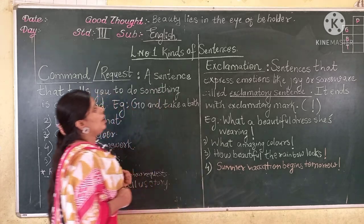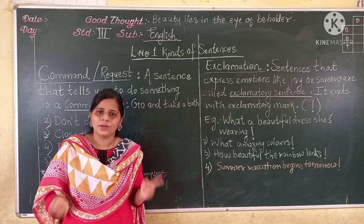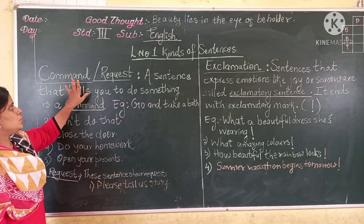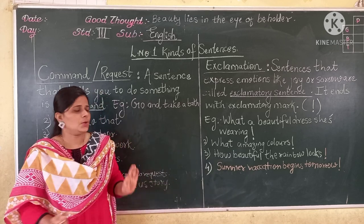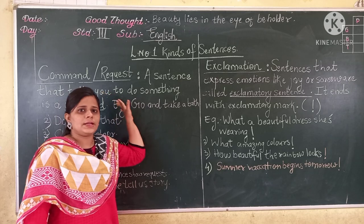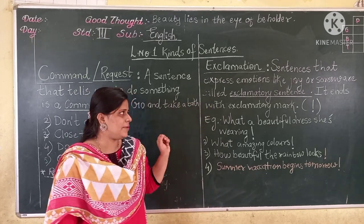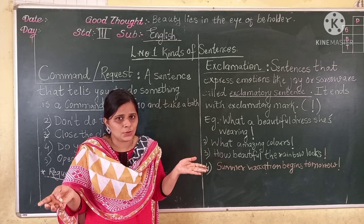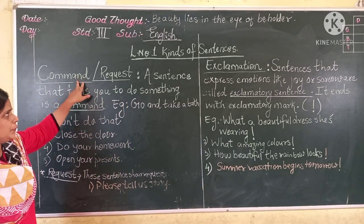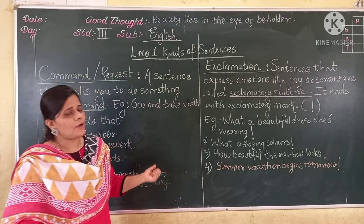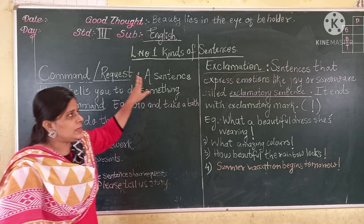Hope you all have understood about command, request, and exclamatory sentence. Now, what is today's homework? You have to write two sentences of command, two sentences of request, and two sentences of exclamation. So in total you have to write six examples — copy them down in your notebook: two examples from command, two examples from request, and two examples from exclamation.